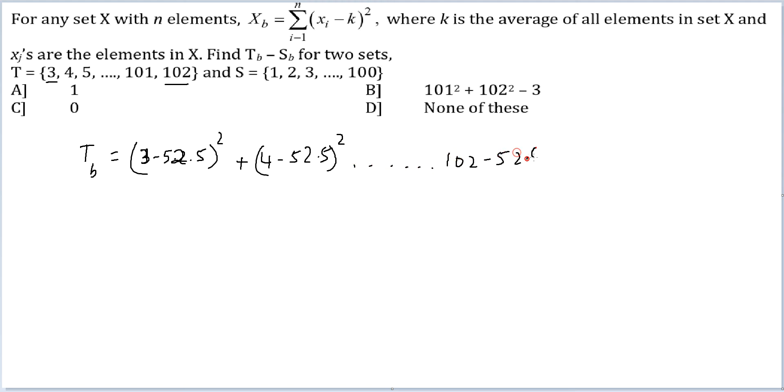Which will be equal to 49.5 whole square. I am not considering the negative part because whole square means it will be positive, plus 48.5 whole square, so on and so forth, up until 50.5 whole square.